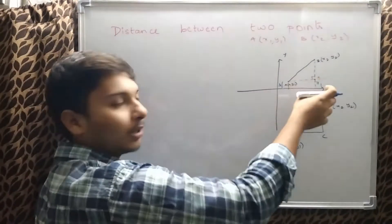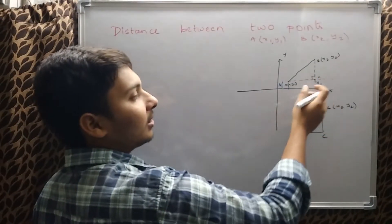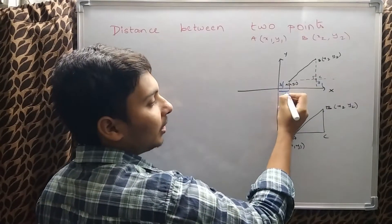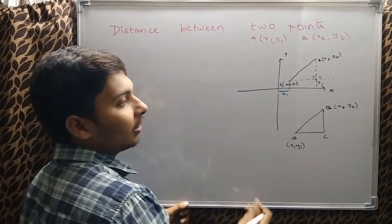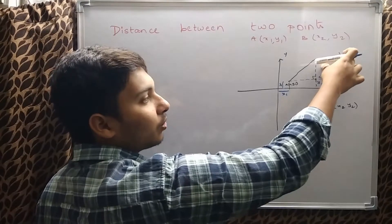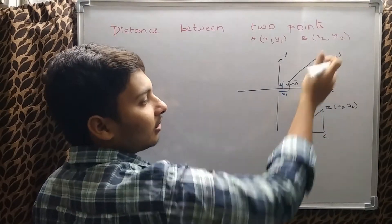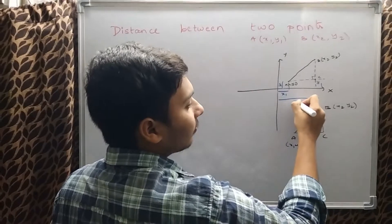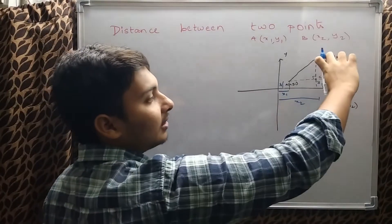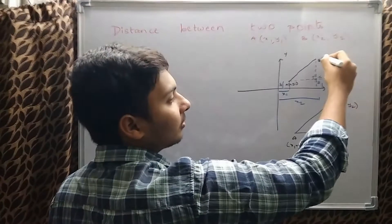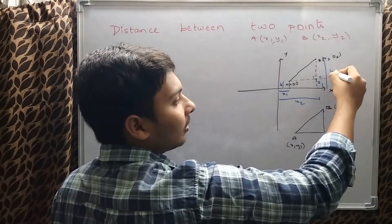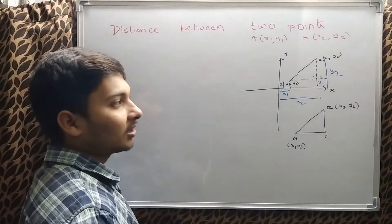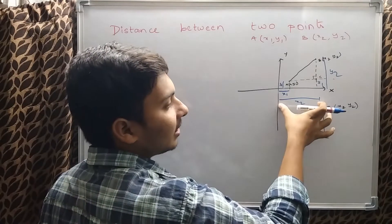Since AC is parallel, this length also equals y1 units. The distance from the origin to A along the x-axis is x1 units, and since point B is (x2, y2), the length along the x-axis to B is x2 units. The length of the perpendicular from B to the x-axis is y2 units.